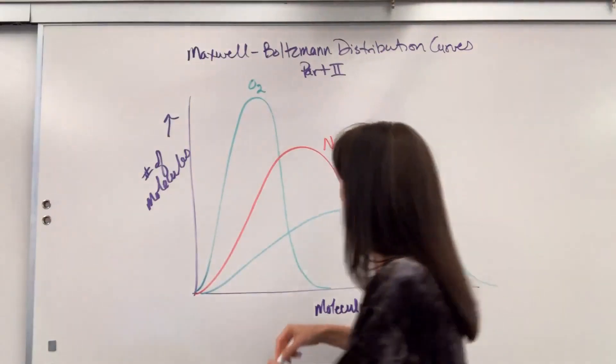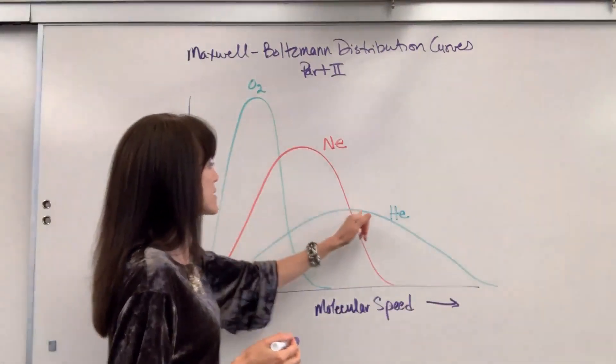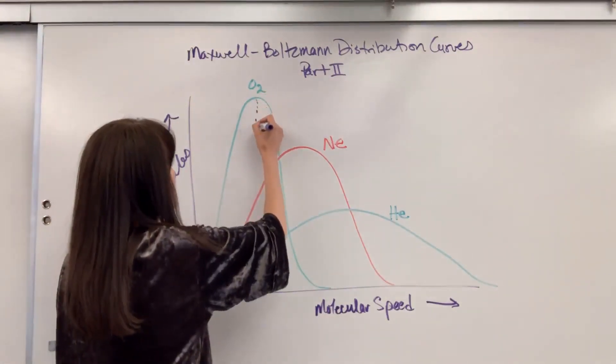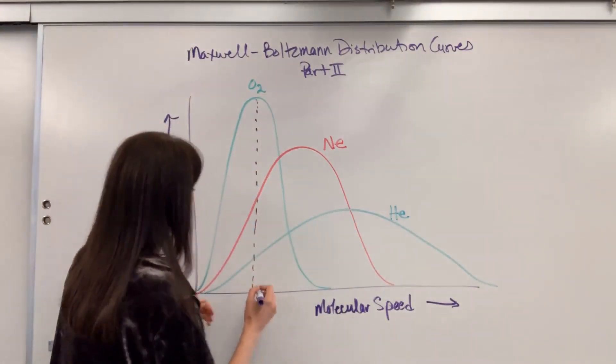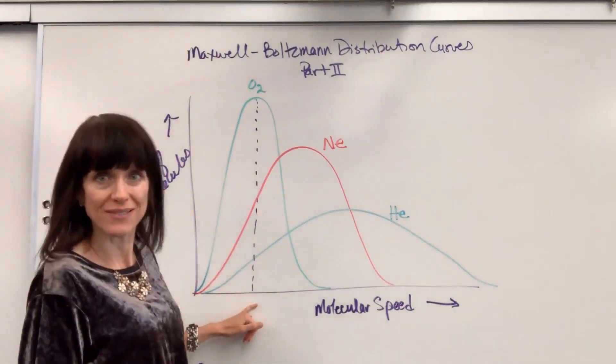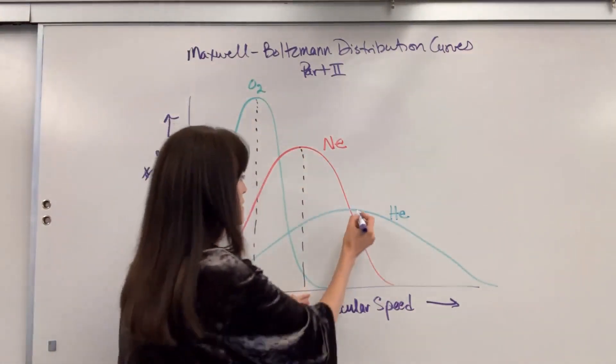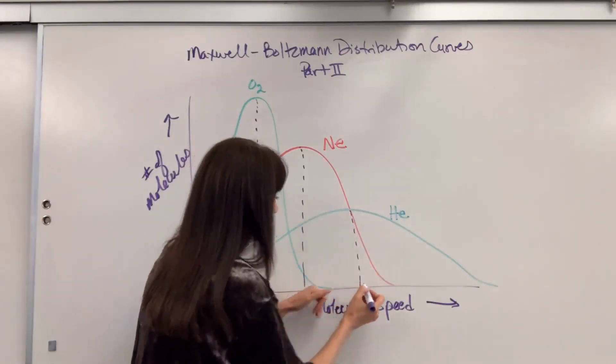I had shared with you that if you take the apex, so the very middle, highest point of all three of these, that gives you the average speed for that molecule. Average speed of O2 would be down here, average speed of neon would be right there, and then the average speed of the helium.